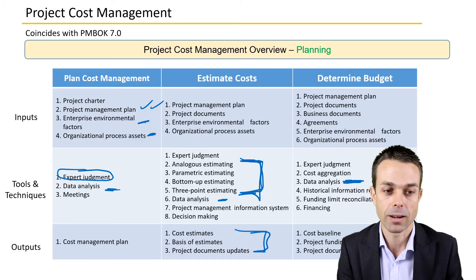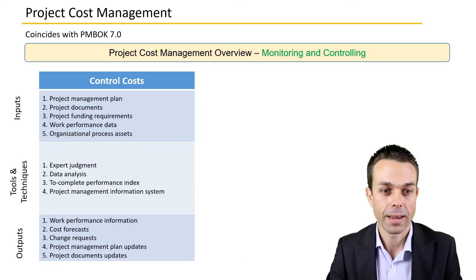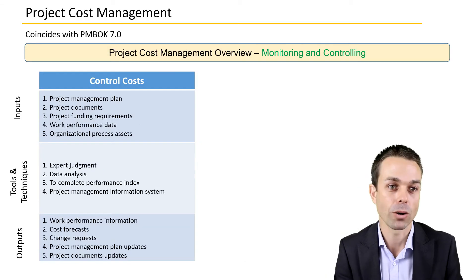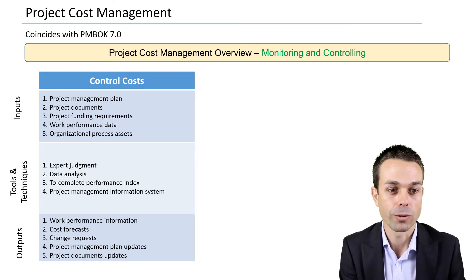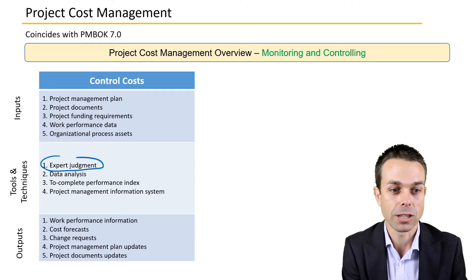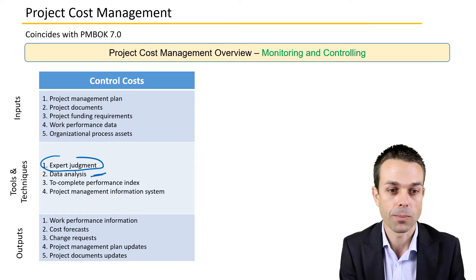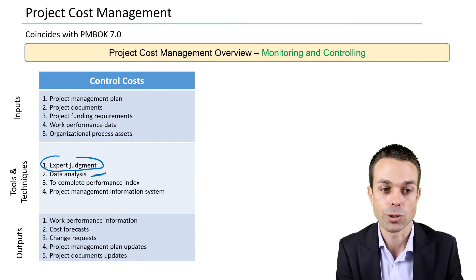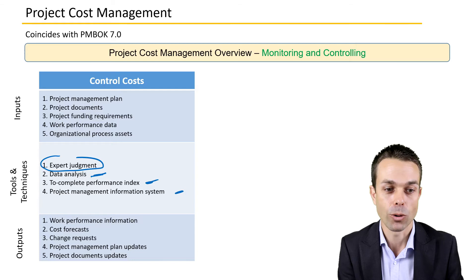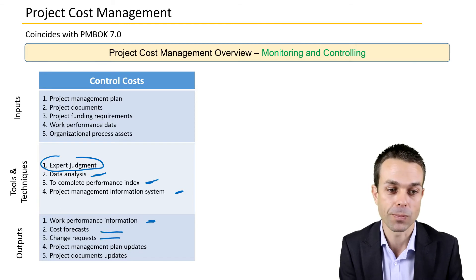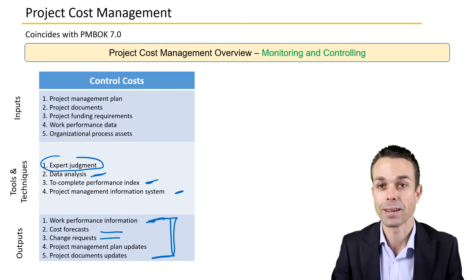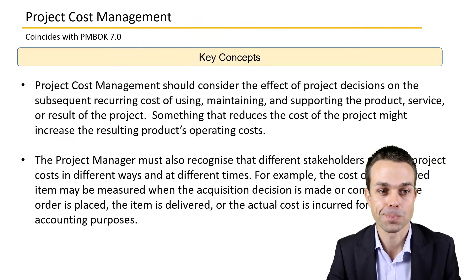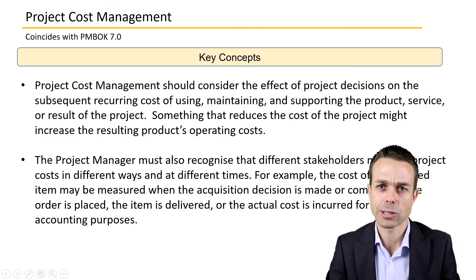For outputs, we've got estimates and baseline documents — our cost baseline. When controlling costs, we again have expert judgment and data analysis as big ones, along with the to-complete performance index, project management information system, and outputs including change requests, cost forecasts, and work performance information.